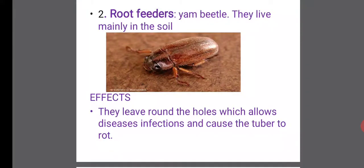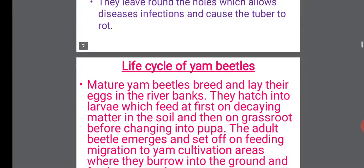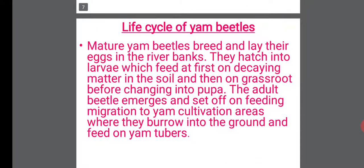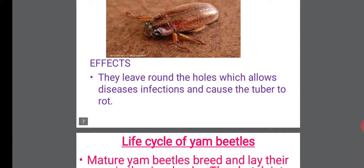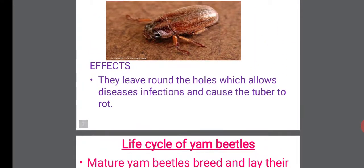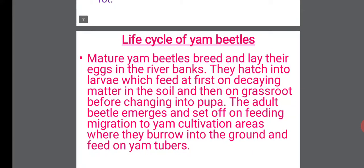The second crop pest that attacks crops is the root feeders. An example is the yam beetle. The yam beetle lives mainly in the soil. They bore holes which allow disease infections and cause the tuber of the yam to rot. Most of the time you might have seen yam tubers getting rotten — this is mainly caused by this insect pest, the yam beetle.